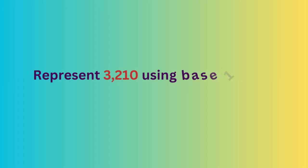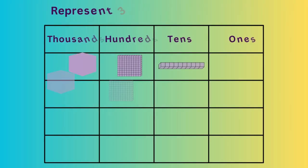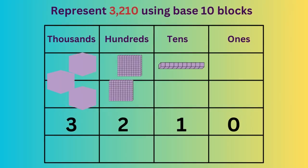In this final example, let's represent the number 3,210 using base 10 blocks. In the 1000s column, we have 3000, so we place three cubes. In the 100s column, we have 200, so we place two flats. In the 10s column, we have 10, so we place one long, and we leave the 1s column empty since it is a 0 in the 1s place.